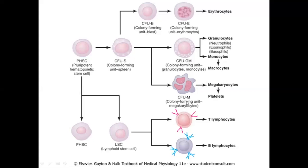Megakaryocytes are further differentiated into platelets, so all three types of cells are developed from the pluripotent hematopoietic stem cells. These are also further differentiated into lymphoid stem cells, which give rise to two types of lymphocytes: B lymphocytes and T lymphocytes. B lymphocytes produce antibodies and T lymphocytes provide immunity.